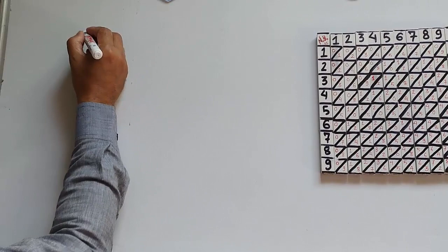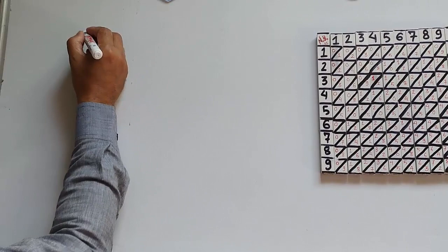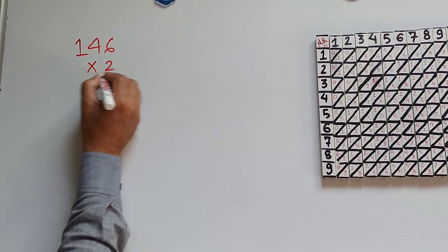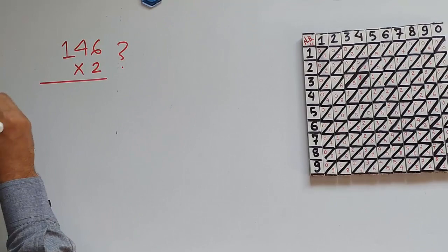For example, if we take the number 146 multiplied by 2. So how are we going to compute this? We are going to compute this with the help of Napier's bone.